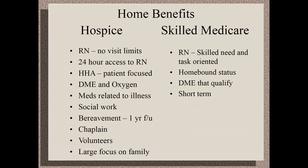For skilled Medicare — either home care or nursing home — patients basically need a therapy need, IV antibiotics, or a new feeding tube. Those are essentially the only three things that qualify people for skilled nursing. Nobody gets paid for just being sick or unable to care for themselves. At home, patients must be homebound, and once they're no longer homebound, the skilled benefit and associated nursing leave.